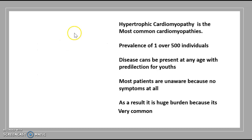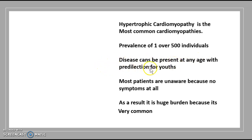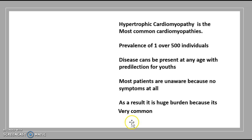Let's get straight into the facts. Hypertrophic cardiomyopathy is the most common of the cardiomyopathies. It has a prevalence of 1 in every 500 individuals, so it's very common. The disease can be present at any age, with preference in youth or in children. Most patients are unaware because this disease has no symptoms at all, making it a huge burden.